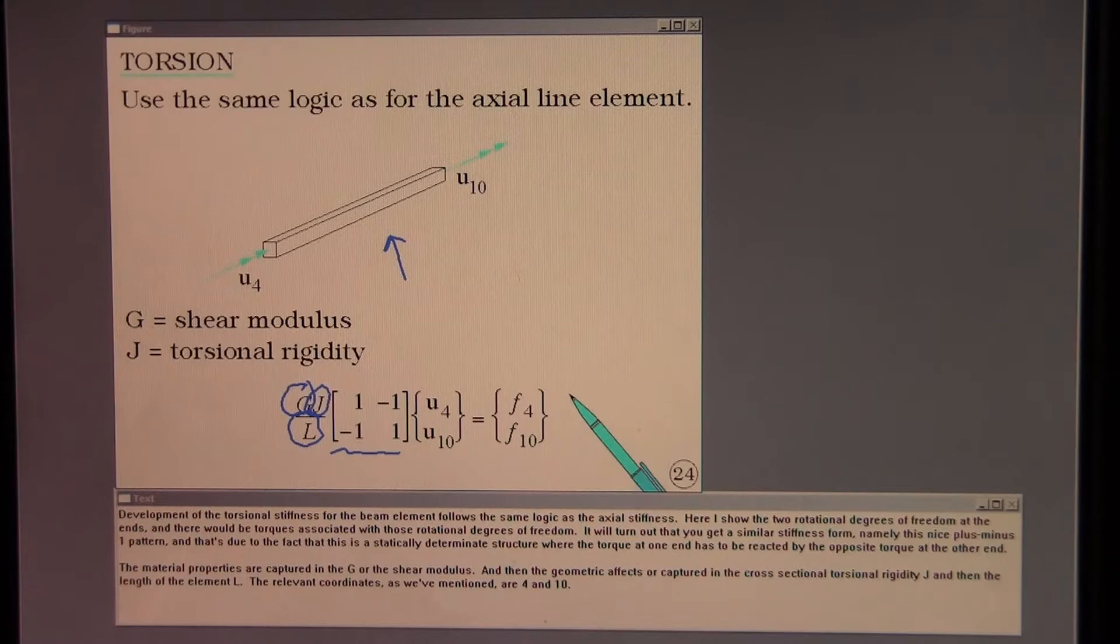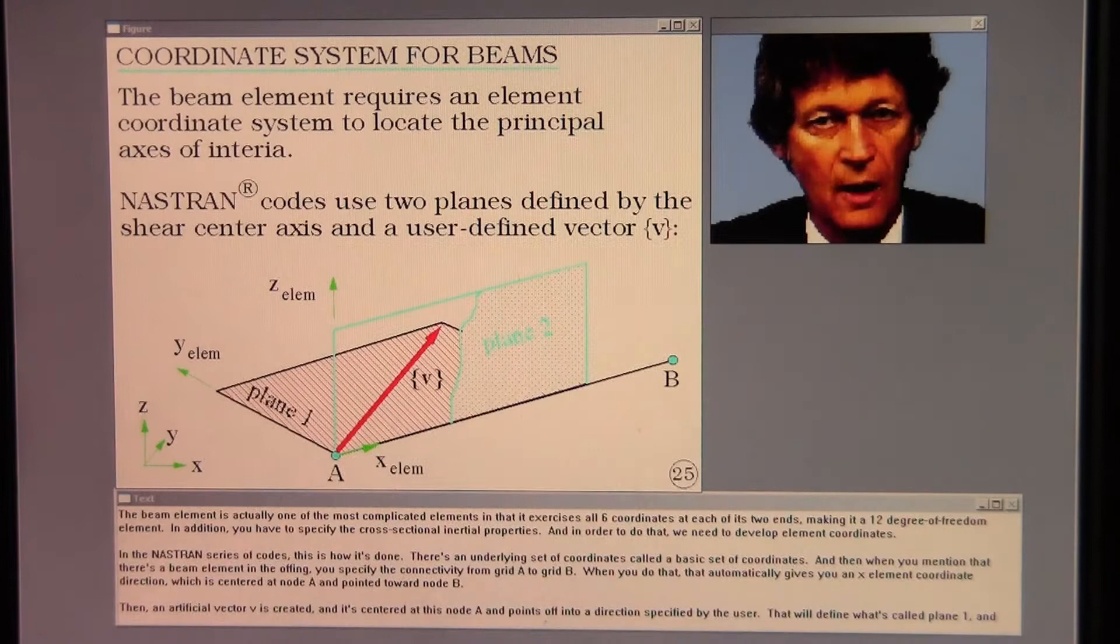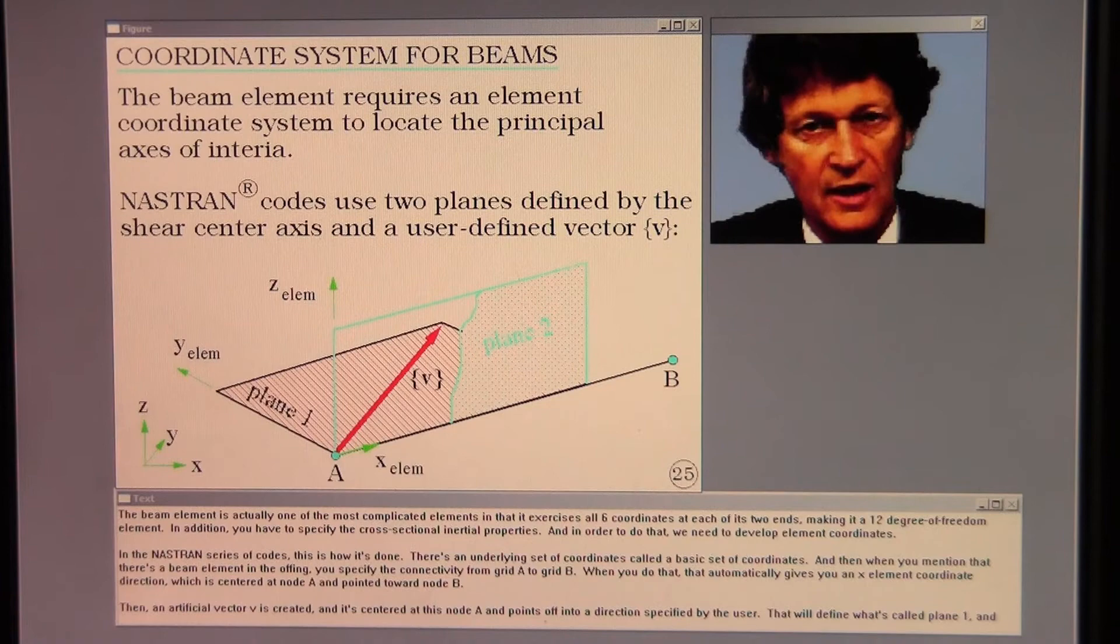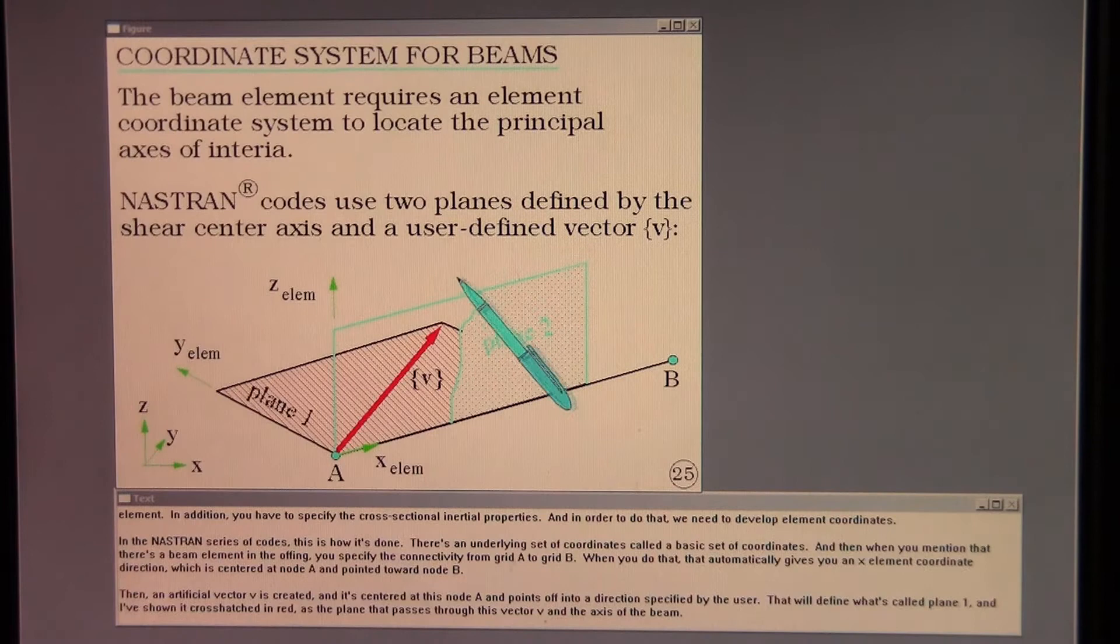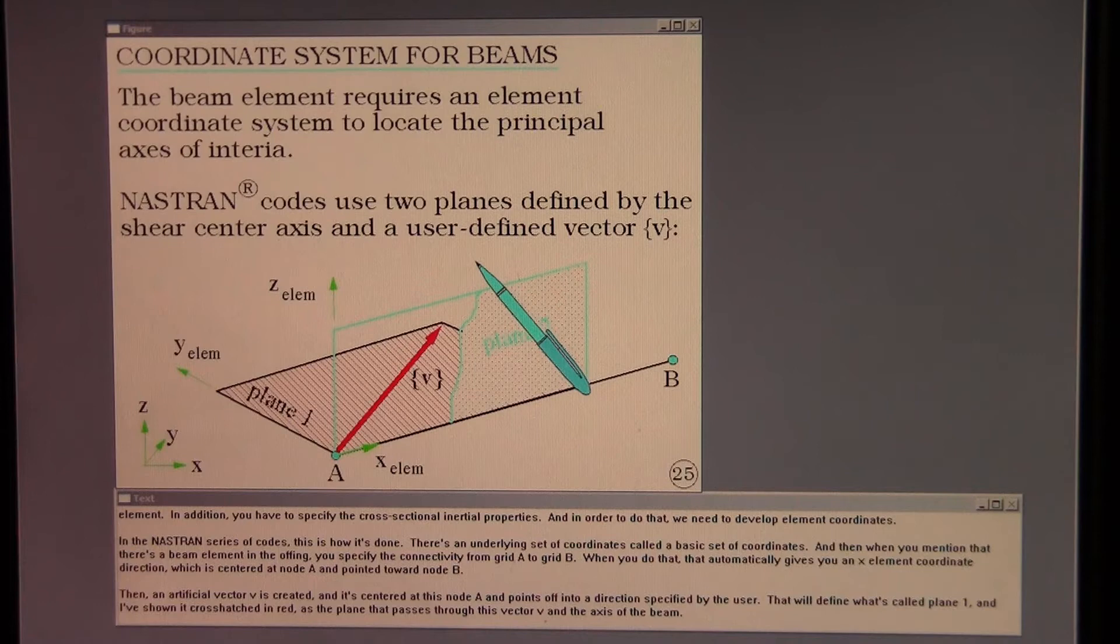The beam element is actually one of the most complicated elements in that it exercises all six coordinates at each of its two ends, making it a 12 degree of freedom element. In addition, you have to specify the cross-sectional inertial properties.